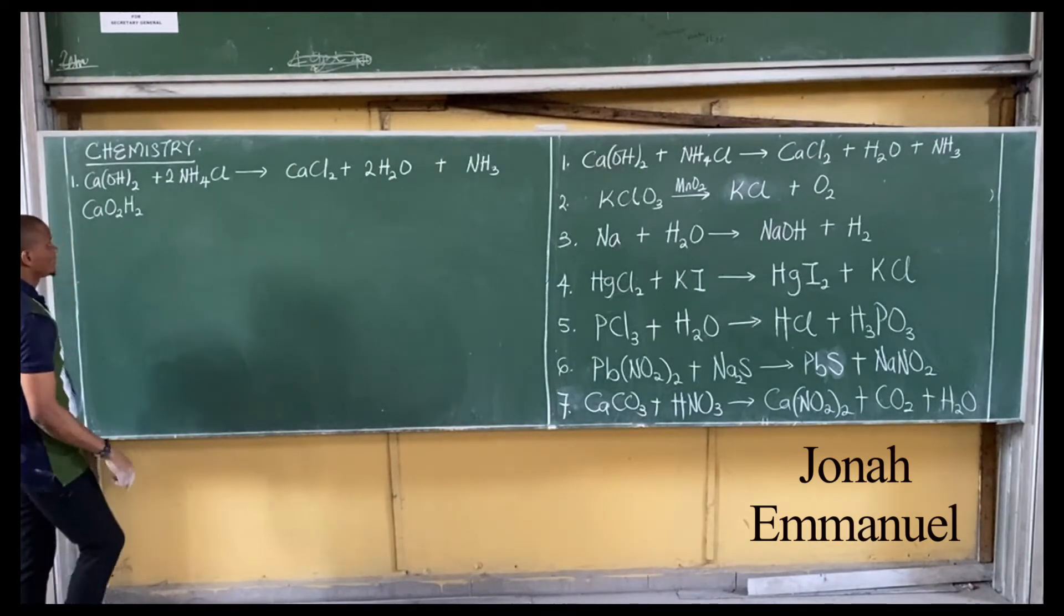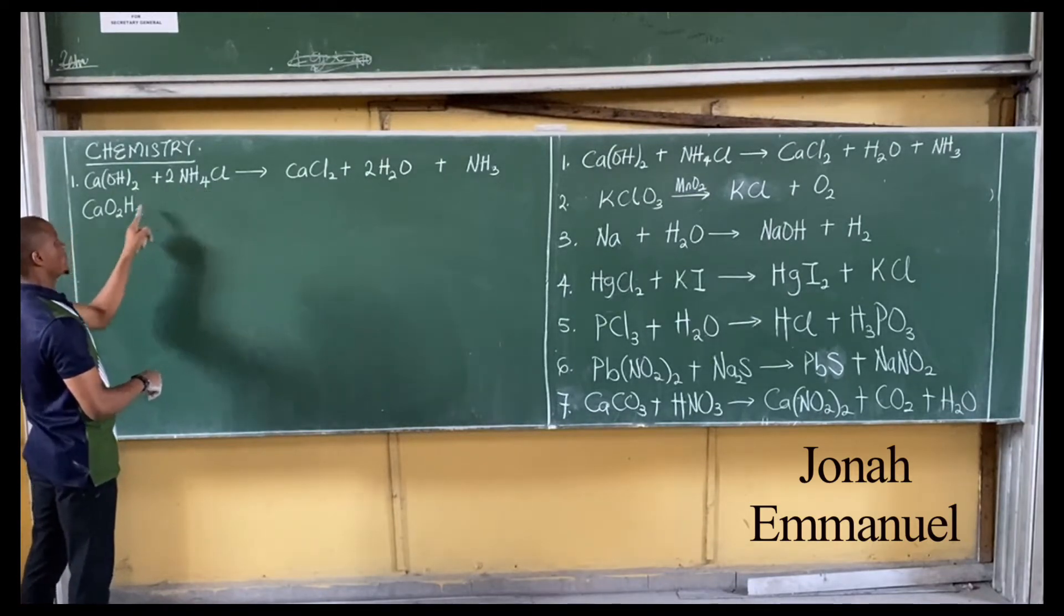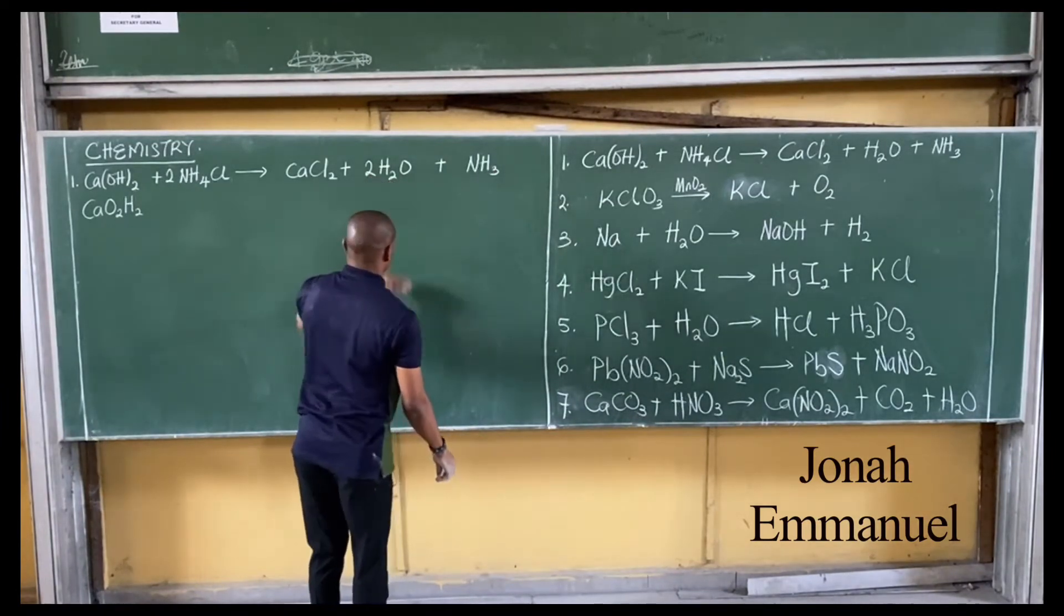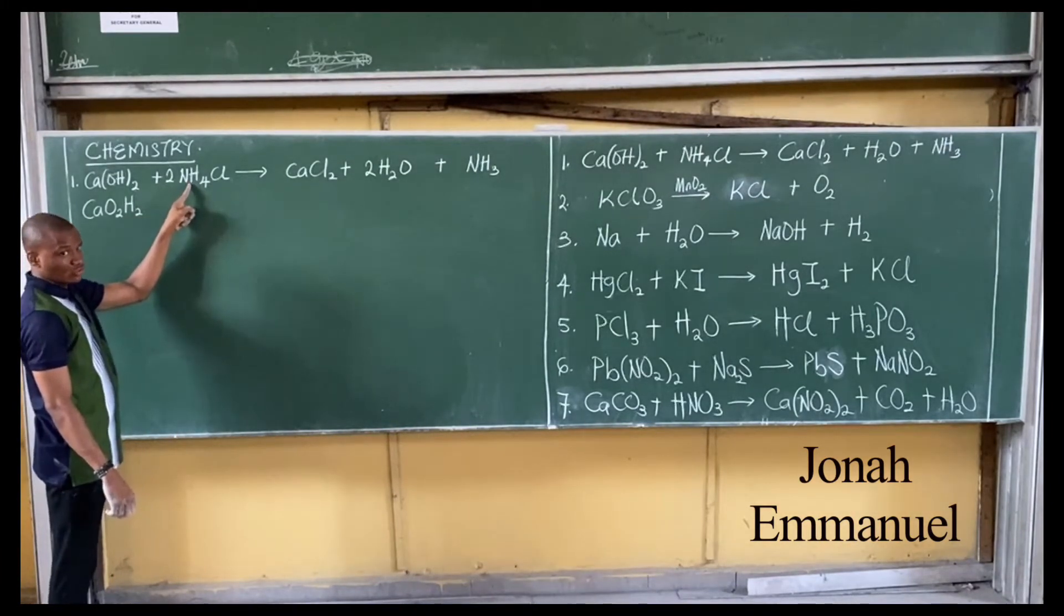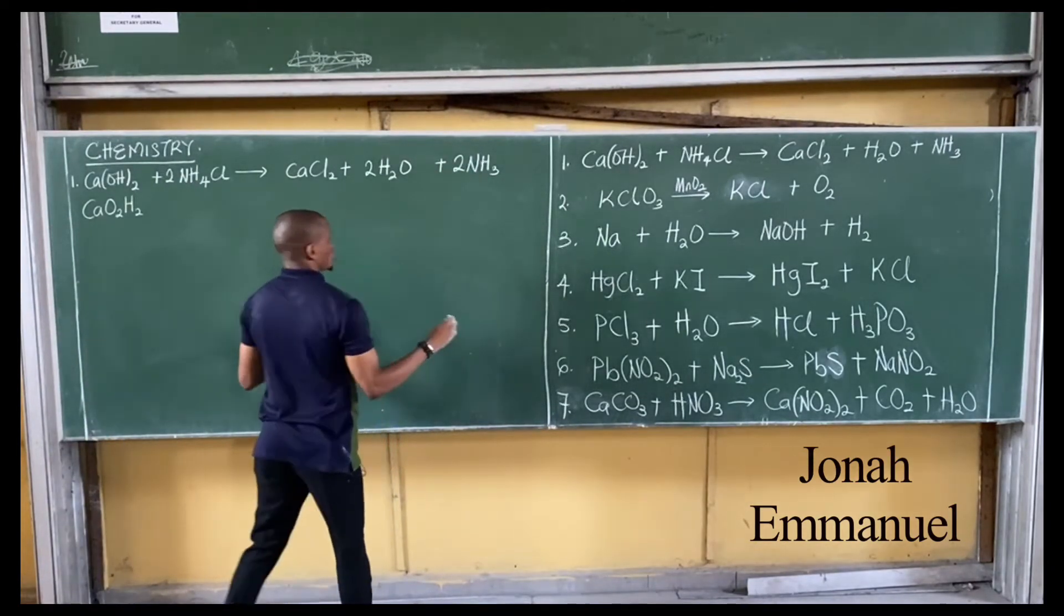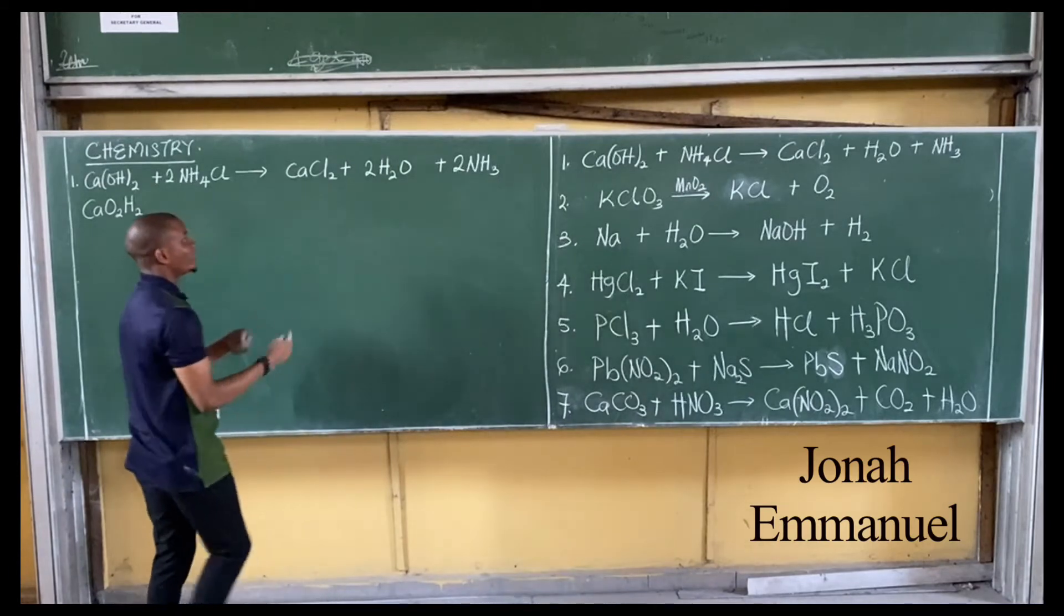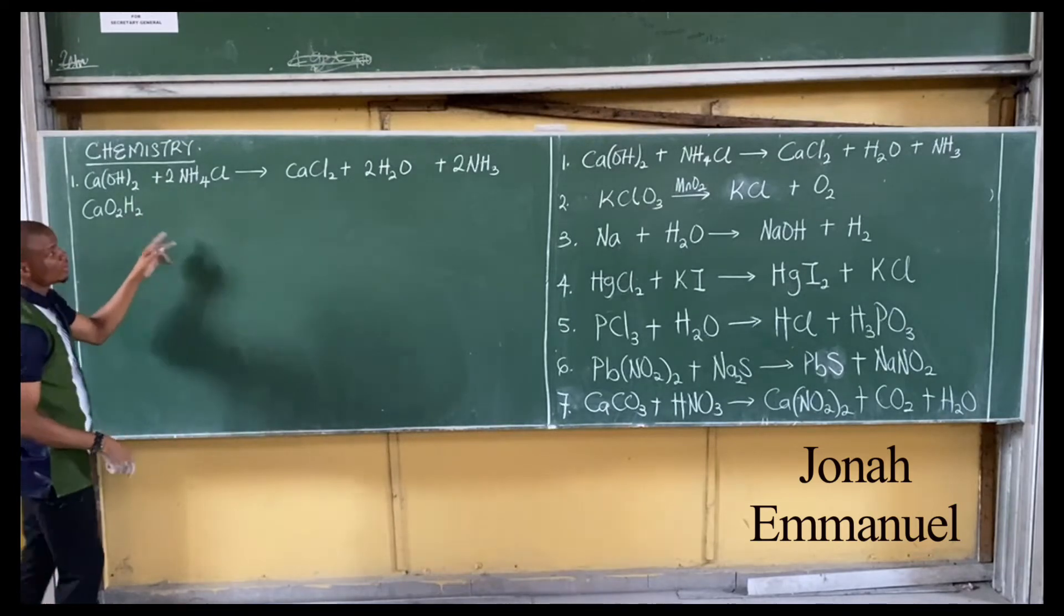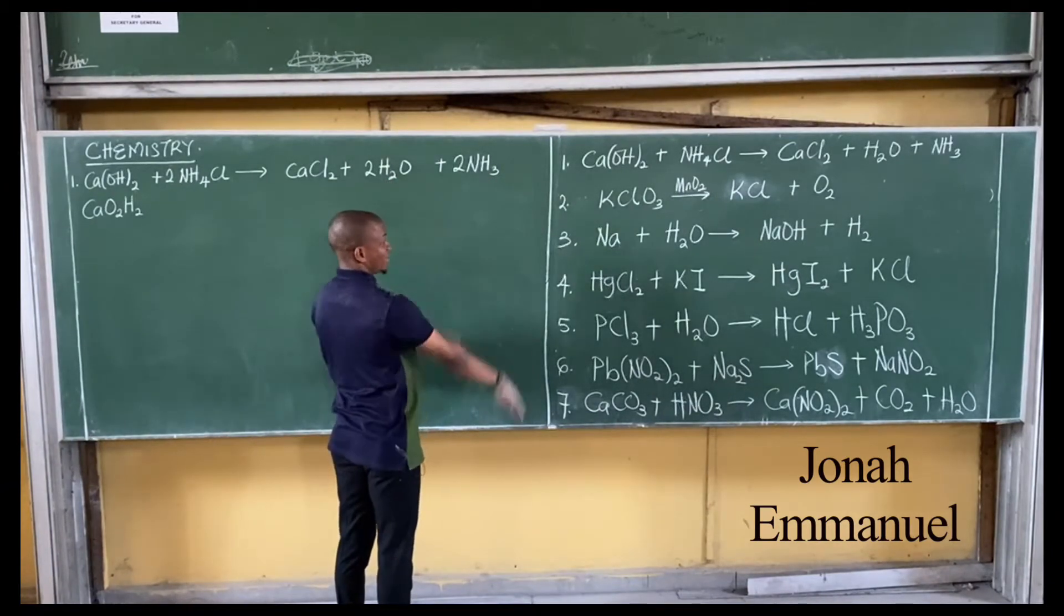So that means calcium is balanced, oxygen is balanced, and chlorine is balanced. Our numbers are nitrogen and hydrogen. Let's work out hydrogen. Two times four is eight, so eight plus two - ten hydrogen. Come here, two times two is four, plus one here still gives four. Observe nitrogen: two times one is two. One nitrogen here. Put two here.